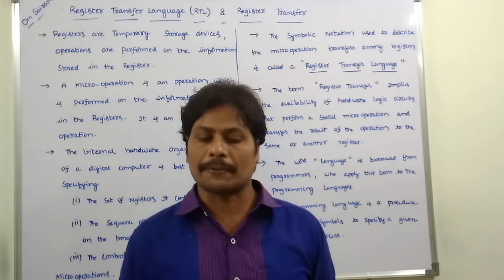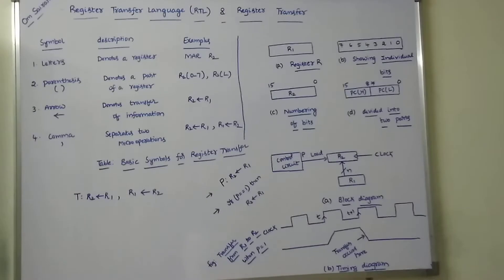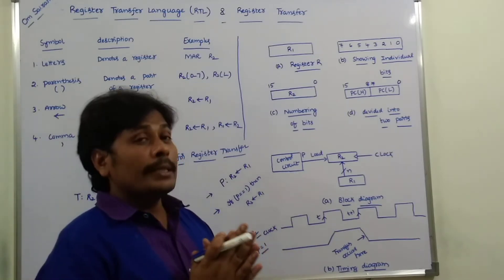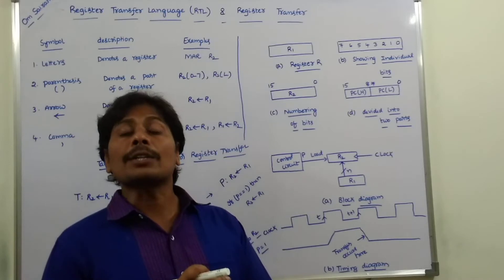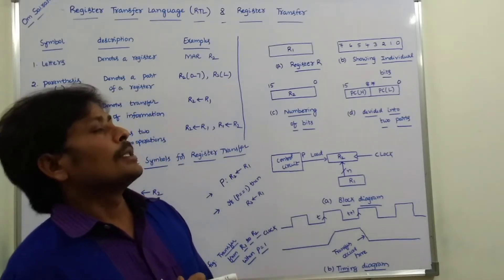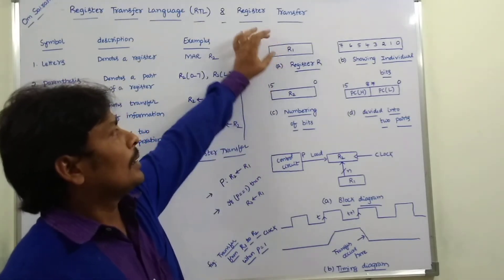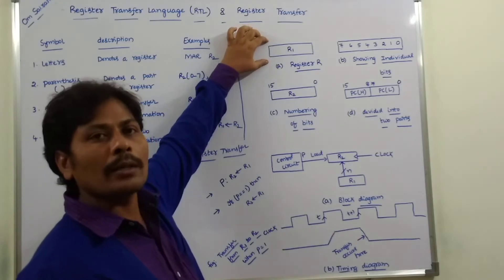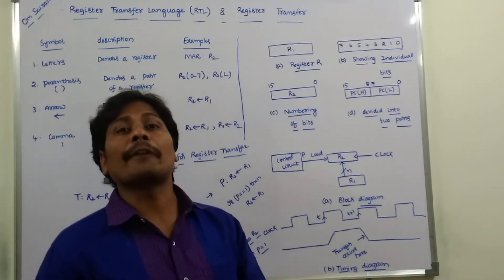Now, register transfer. The registers are denoted by capital letters, which indicates the function of the registers. Generally, registers are denoted by a rectangular box. This rectangular box is used to represent the register, and under the rectangular box we write the name of the register in capital letters, indicating the function of the register.